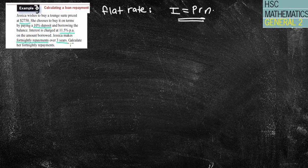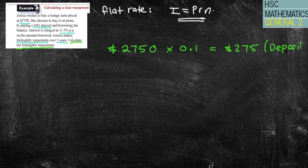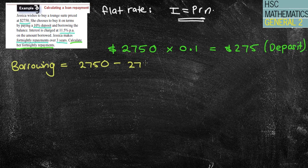So first of all, because it's asking to find the actual question says, calculate the fortnightly repayments, we need to figure out how much she has borrowed in total. So we know that the original price was $2,750. That's how much it costs, but she didn't actually borrow that amount because she made a 10% deposit. So on our calculators, if we type in 2750 times 0.1, this is how much deposit we're going to have, $275. I'm going to write there so everyone knows that it's my deposit, including the marker. So what we need to do to figure out how much I am borrowing, we're going to subtract the $275 from the amount that it costs. Okay. So if I do that, we're going to come up with $2,475. That's how much I am actually borrowing.